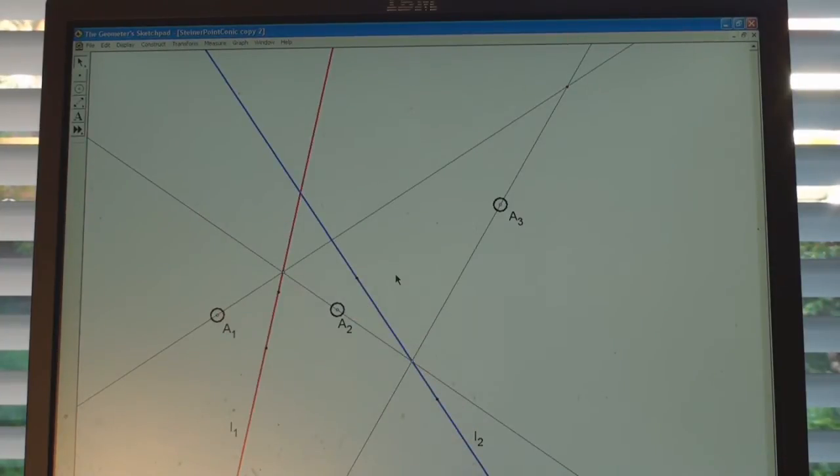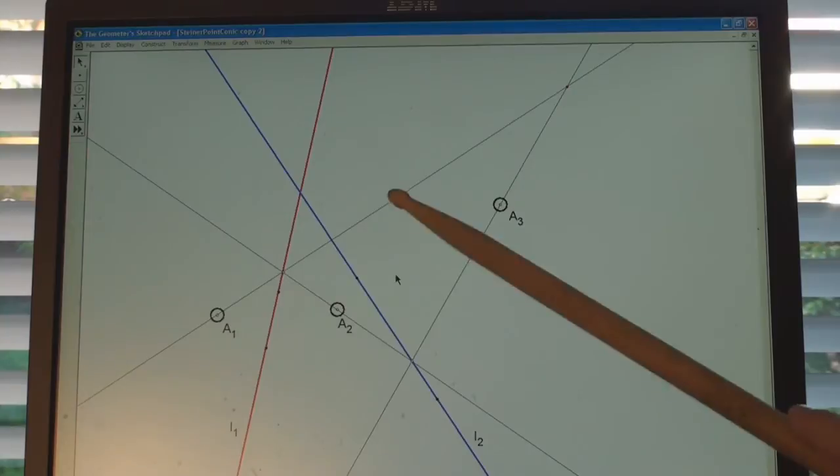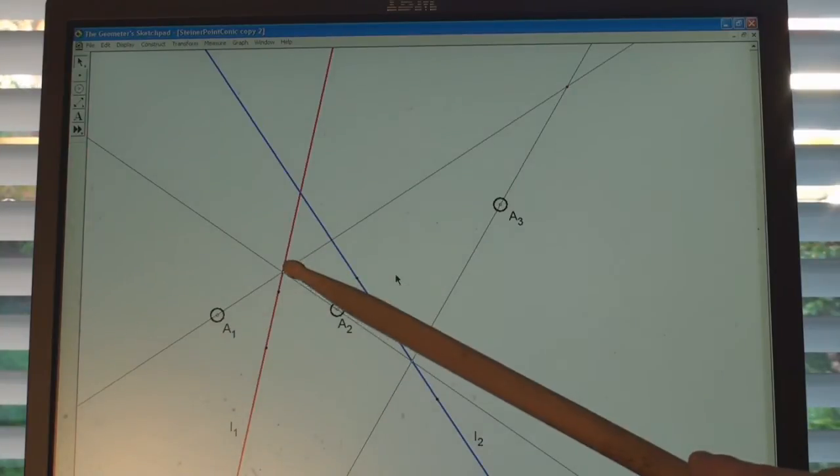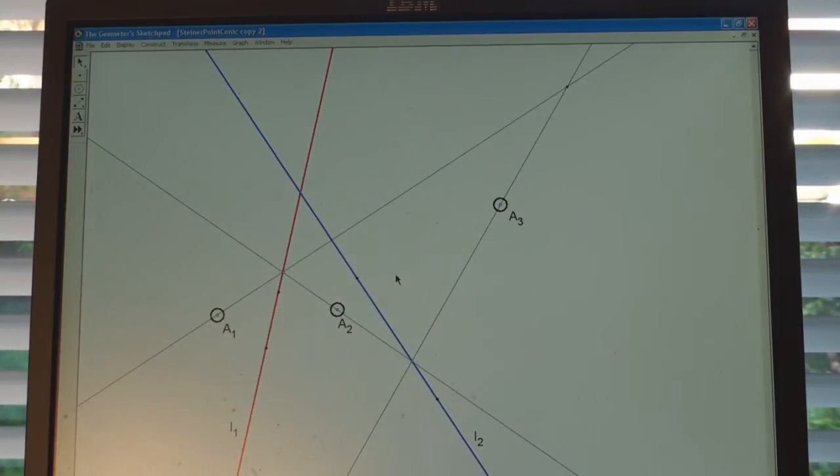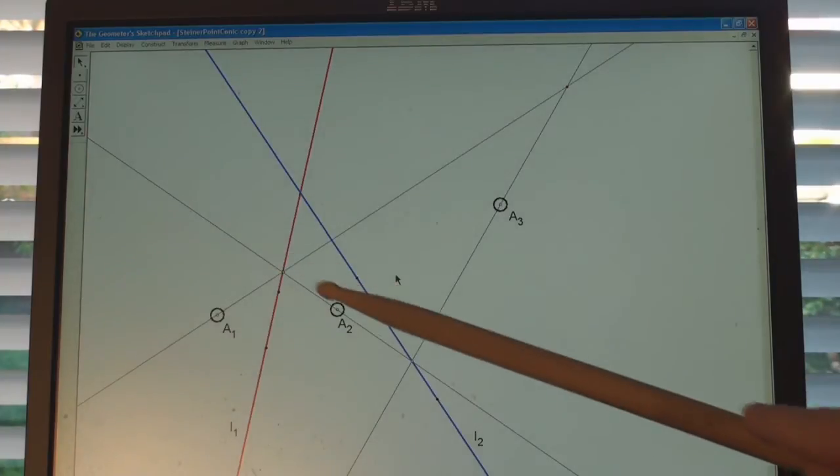So how does that work? Well, you take a random line through A1, say that one there, you see where it intersects L1, and you use that point to pick out an element in the pencil at A2.